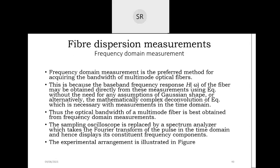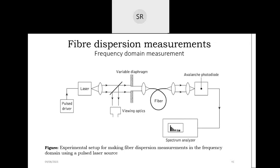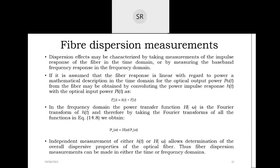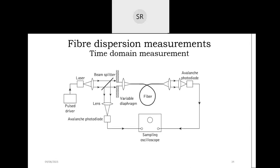Pulse broadening can be measured in two ways: time domain measurement or frequency domain measurement. For time domain measurement of dispersion, we require a large span for measuring samples, since pulses propagate and dispersion occurs over a time span. A sampling oscilloscope is used.